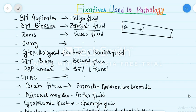For the testis, SUSAS fluid is used, and also for the ovary, SUSAS fluid is used. Cytopathological fixative used is mainly Bouin's fluid, and also in GIT biopsy.